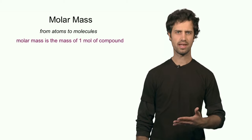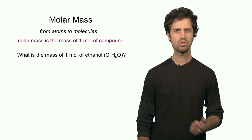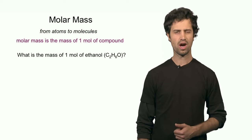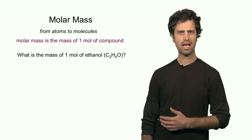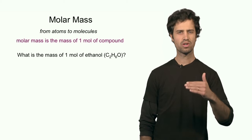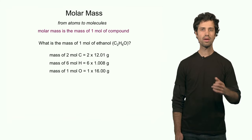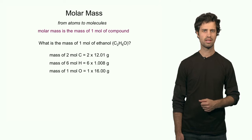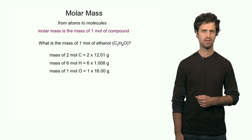A molecule contains several elements, for instance ethanol. Ethanol has two carbons, six hydrogens, and one oxygen. In order to determine the molar mass of a molecule like ethanol, we have to add up the contributions of each element. One mole of ethanol contains two moles of carbon, meaning carbon contributes 2 times 12 grams to one mole of the compound.